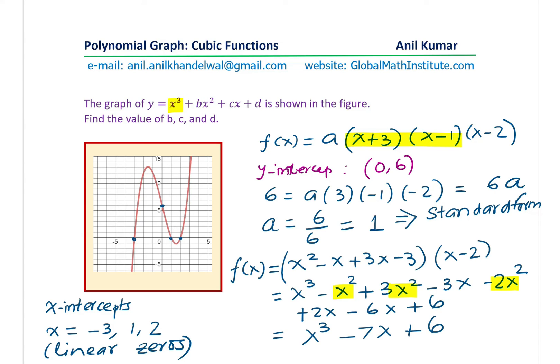So in the given question, we do get the value of b, c, and d. Comparing this with the expression given to us, we can write down our answer. And that is the value of b, which is the coefficient of x squared, is 0.